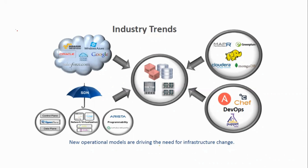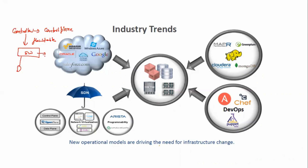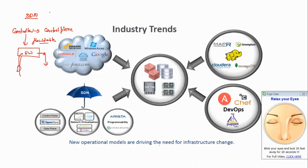In the earlier SDN model, you have the controller handling all the control plane. The controller sends a flow table to all the switches. From the switches, the flow table works like a FIB — forwarding information base — for the data plane. Traffic comes in, the switch searches the flow table, finds the flow, and forwards it.